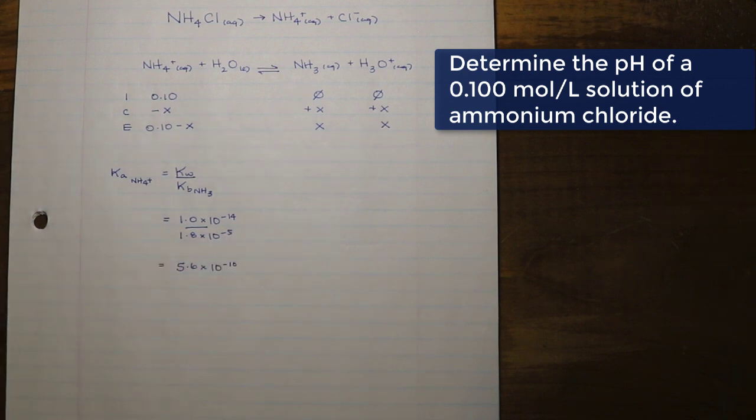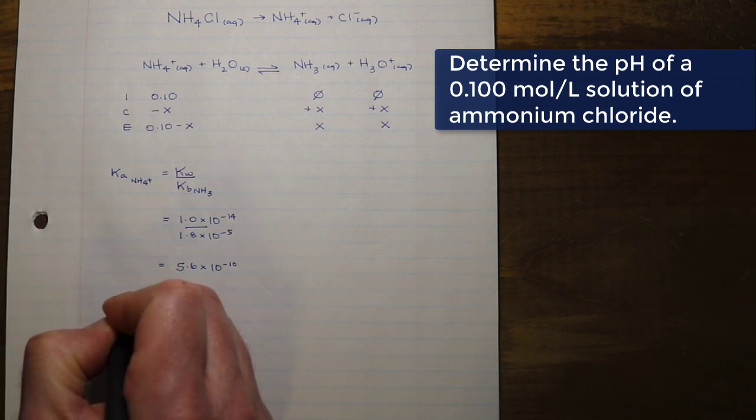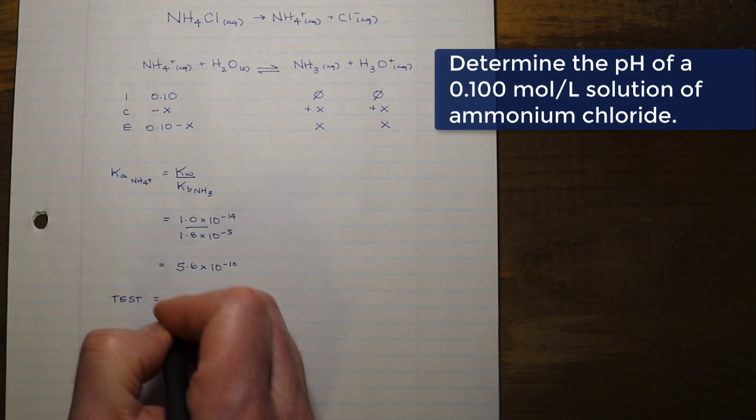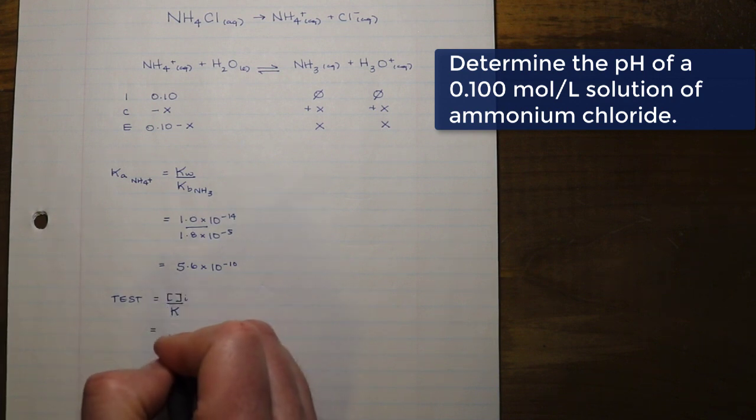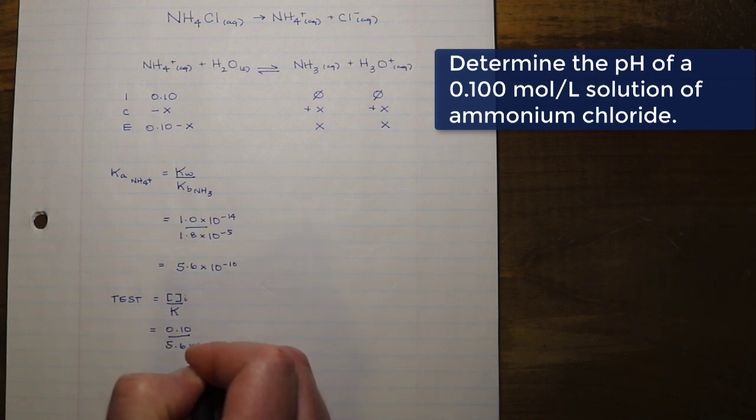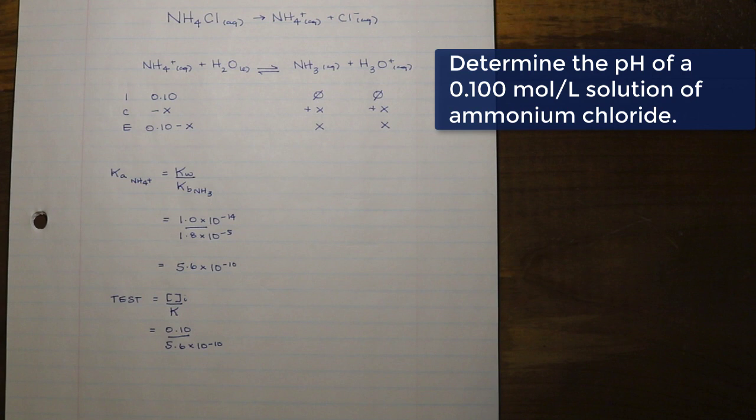Take a look at this Ka value, it is low. Our concentration is relatively high, so what that's going to let us know is that this is going to ionize a relatively small amount, so our x value is going to be pretty low, which means that we probably can and will perform our test. Remember our test is our initial concentration over the K. In this case it's going to be our Ka, so our initial concentration is 0.10 over 5.6 times 10 to the negative 10.